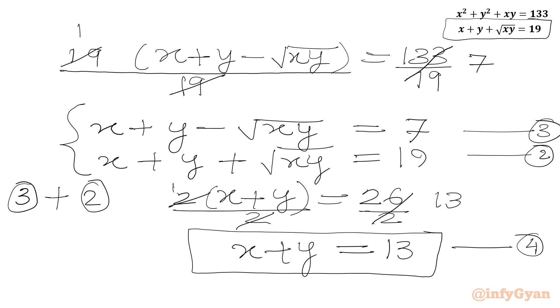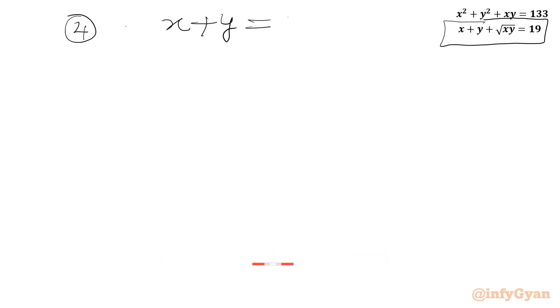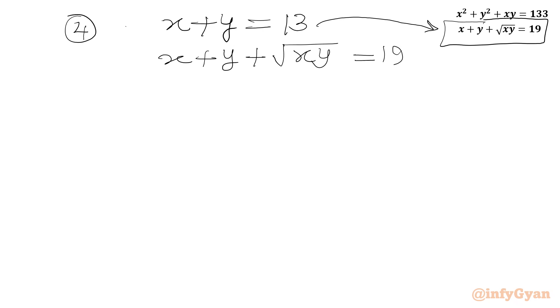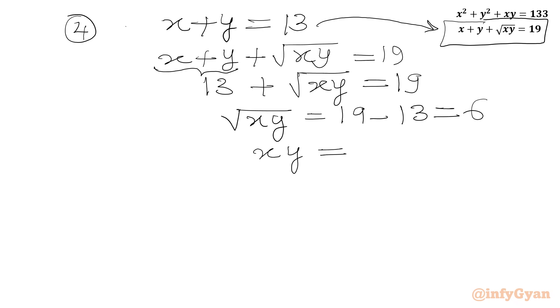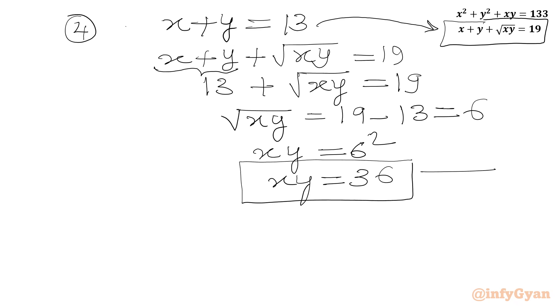From equation 4 and equation 2 we can find the value of xy. Substituting x plus y equals 13 into equation 2 gives 13 plus square root of xy equals 19. Subtracting 13 from both sides, square root of xy equals 6. Squaring both sides gives xy equals 36, which is equation 5.